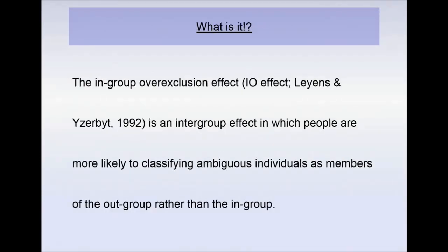A more formal definition: the in-group over-exclusion effect is an intergroup effect in which people are more likely to classify ambiguous individuals as members of the out-group rather than the in-group. The key word is 'ambiguous' — if you're completely sure someone's part of your group, there's no problem. It's only the people you're unsure about that you worry about. If in doubt, you err on the side of caution and call them an out-group member.